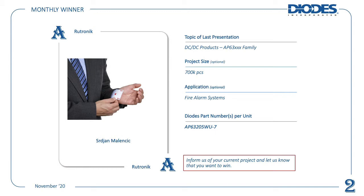Our last month's ace is Sirdejan Malincic, winning an application for fire alarm systems using the AP63 family DC-DC converter. Please note that we don't necessarily select based on prestige or project volume, so any submission is valid. Of course it is optional to share project details or your pictures, but in some cases it may be a great opportunity to promote yourself or your company. Having said that, let us move on to today's presentation.